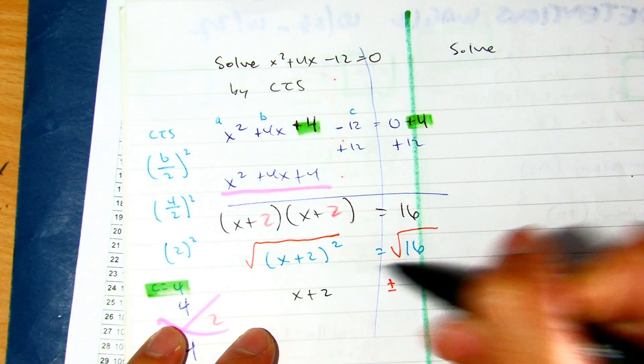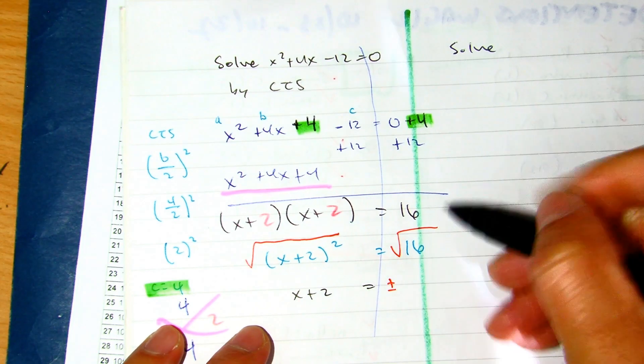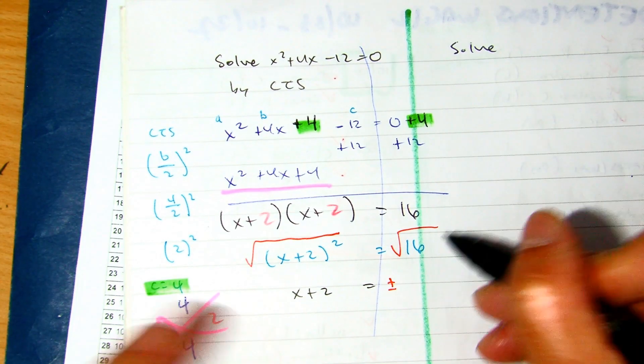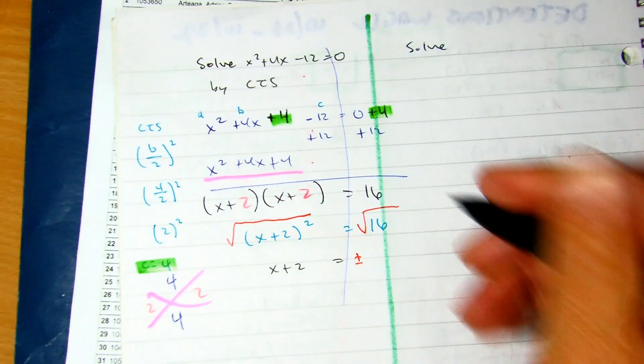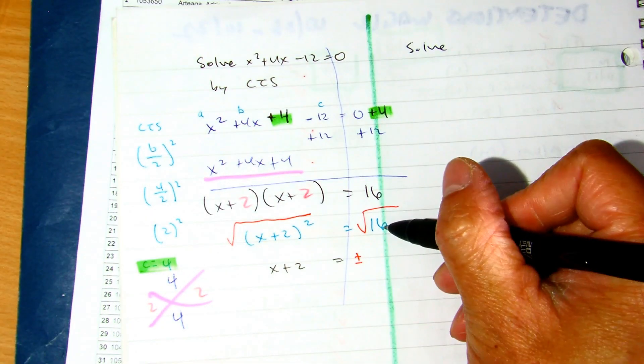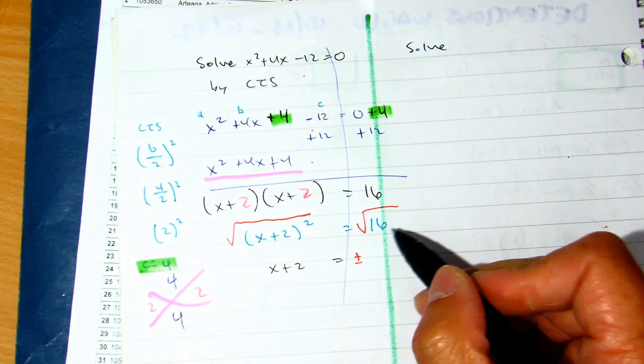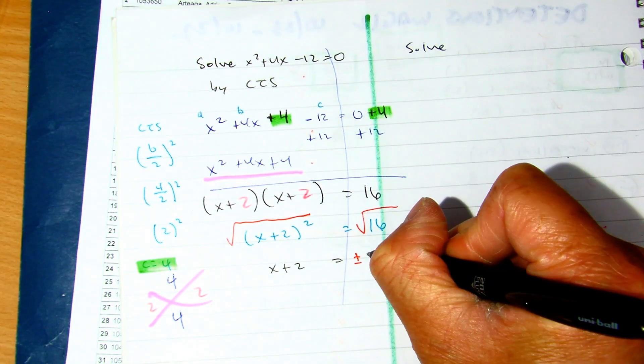You should also have plus or minus. x + 2 equals the square root of 16. Students are struggling on this on the back side of your test. Two identical numbers that multiply to be 16, what are they, class? 4. Does it go on the inside or outside? Outside.